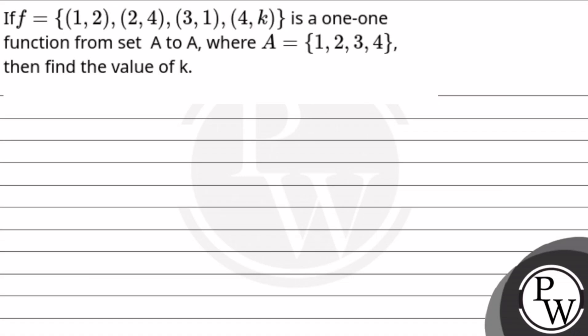The question says if f is equal to the set {(1,2), (2,4), (3,1), (4,k)} is a one-to-one function from set A to A, where A equals the set {1, 2, 3, 4}, then find the value of k.